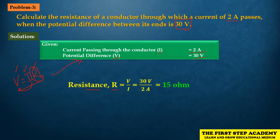The formula is R = V / I. Substituting the values: V = 30V and I = 2A. So R = 30 divided by 2, which equals 15. The unit V/A converts to Ohm, so the resistance value is 15 Ohm.